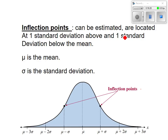Inflection points could be estimated at one standard deviation above, one standard deviation below - it's the same thing we just talked about. Remember, mu is the mean, sigma is the standard deviation. If you don't know those two signs by now, I'm going to cry. Mu - mean. Sigma - standard deviation. What's the other symbol for standard deviation? S. What's the other symbol for the mean? X-bar. Now we're doing just populations, so we don't use the x-bar and the S as much as we did in previous chapters.